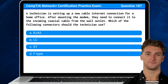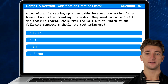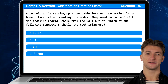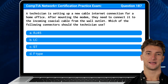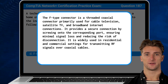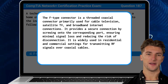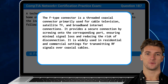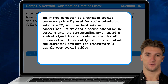Question 187: A technician is setting up a new cable internet connection for a home office. After mounting the modem, they need to connect it to the incoming coaxial cable from the wall outlet. Which of the following connectors should the technician use? The answer is D, F-Type. The F-Type connector is a threaded coaxial connector primarily used for cable television, satellite TV, and broadband internet connections. It provides a secure connection by screwing onto the corresponding port, ensuring minimal signal loss and reducing the risk of disconnection. It is widely used in residential and commercial settings for transmitting RF signals over coaxial cables.